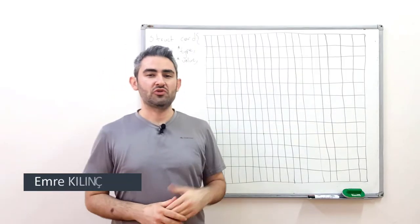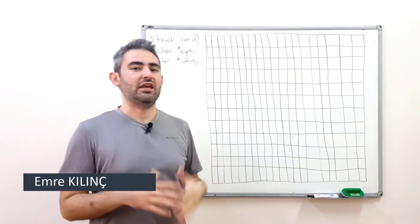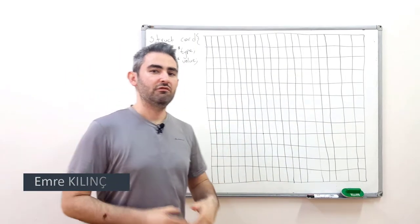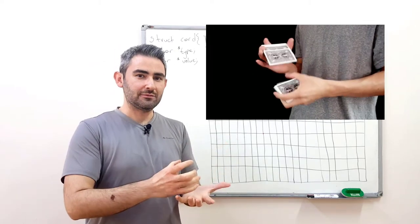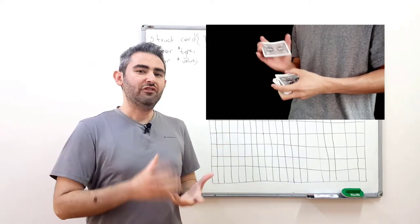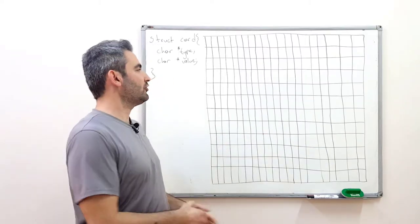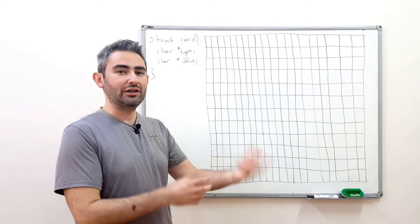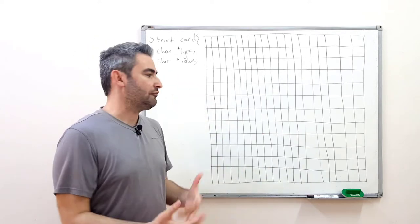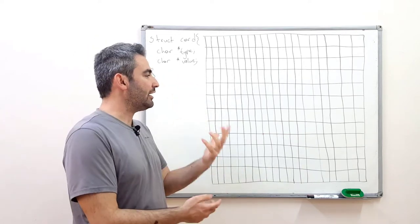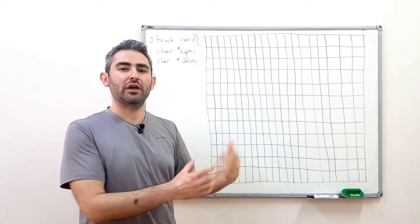Now we are going to use structs and pointers in the same example. We will create a card deck and try to shuffle them. The steps are: we are going to create our card deck using a struct, and we are going to create two two-dimensional arrays.